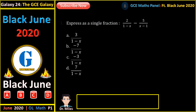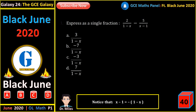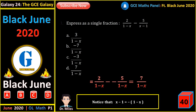Express as a single fraction. Looking at the alternatives, the final fraction is 1 minus x. We make both fractions' denominators 1 minus x. Note that x minus 1 is the same as minus times (1 minus x). So this gives us 2 over (1 minus x) minus minus 5 on (1 minus x), and the value is 7 on (1 minus x), a single fraction.